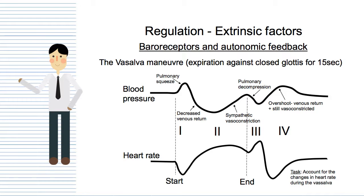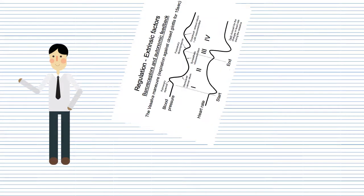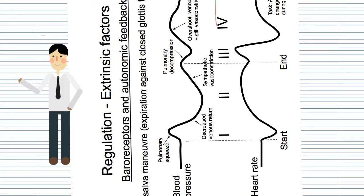Blood pressure is increasing not only because more blood is being pumped out, but also because the blood vessels are already sympathetically vasoconstricted. That's why they say it's going to overshoot — because venous return returns and you're still vasoconstricted. Eventually the vasoconstriction wears off and blood pressure returns back to normal. That's basically the Valsalva maneuver. What I find absolutely amazing is how the relationship between blood pressure and heart rate is inverse — just looking at these graphs, you can see it's like a mirror reflection.